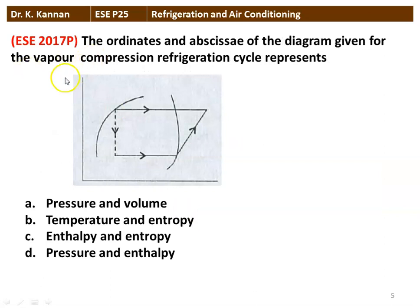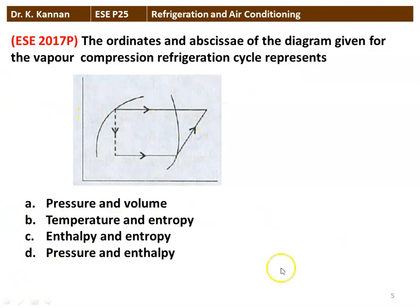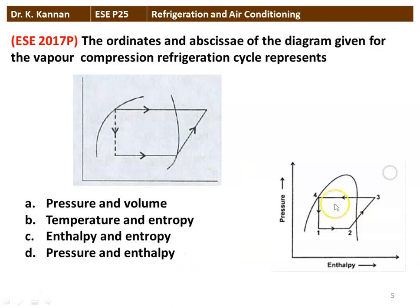The next question: the ordinates and abscissa of the diagram given for the vapor compression refrigerant cycle represents — pressure-volume, temperature-entropy, enthalpy-entropy, or pressure-enthalpy? The answer is pressure-enthalpy: pressure on the y-axis and enthalpy on the x-axis.